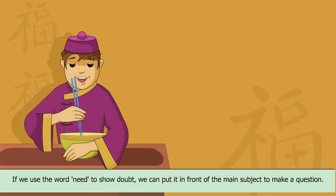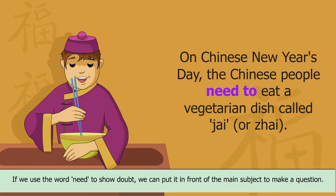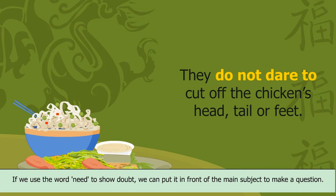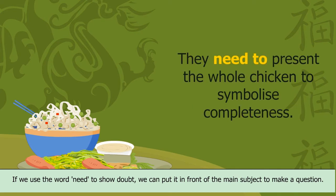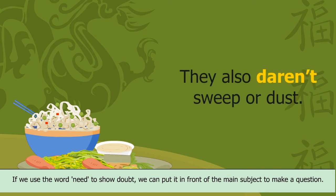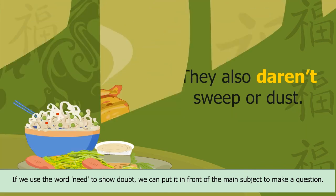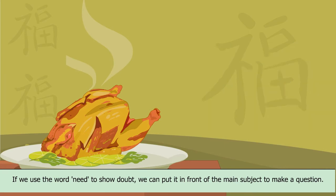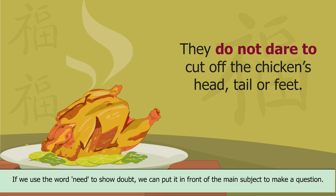Let us look at some more examples. On Chinese New Year's Day, the Chinese people need to eat a vegetarian dish called jai. Other food items include whole fish and chicken. They do not dare to cut off the chicken's head, tail or feet. Dare can also be used as an ordinary verb, followed by an infinitive with to.